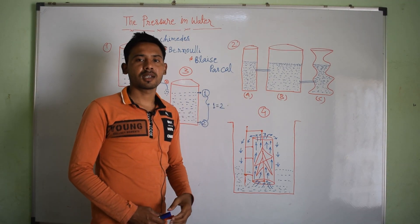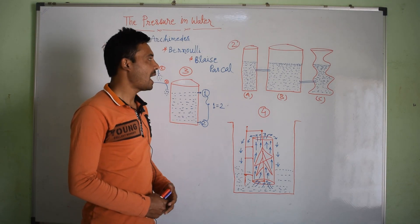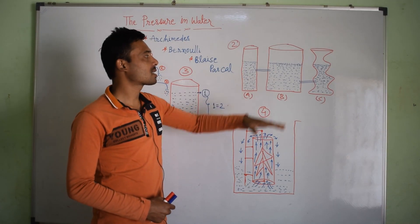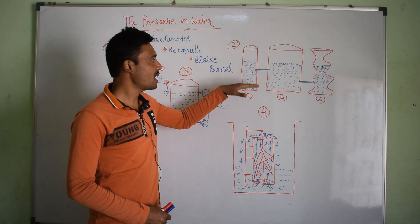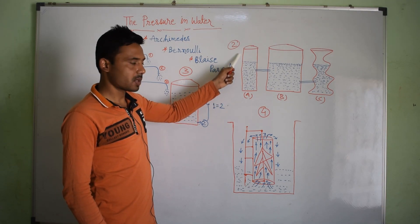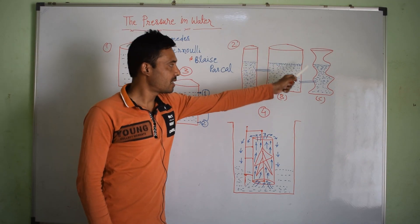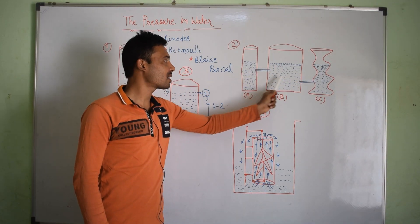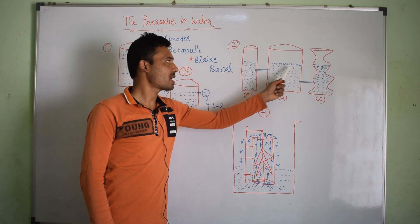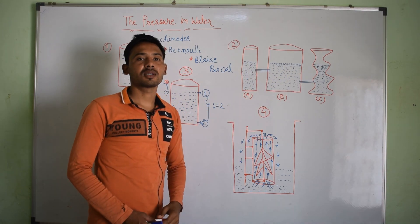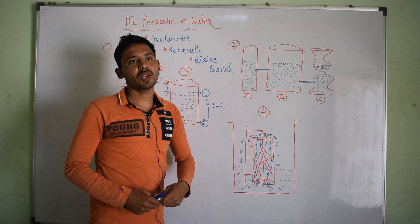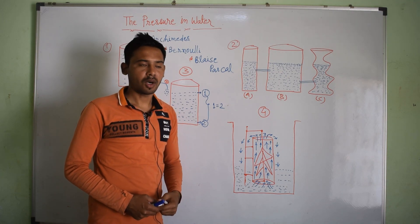Now looking at this second picture, we see various types of water containers, and the water is stable in all of them. Water pressure is equal in all these containers. This vessel is smaller, this one is larger, and this one is zigzag, but when we connect all three, the water level equalizes across all three containers, proving that water pressure is equal in all shapes of vessels.